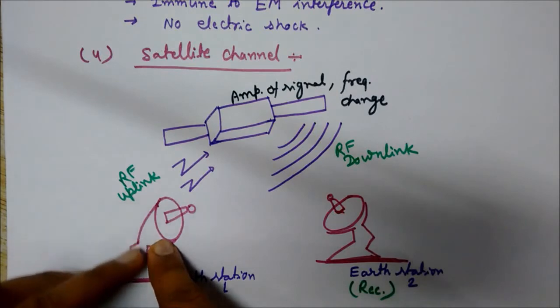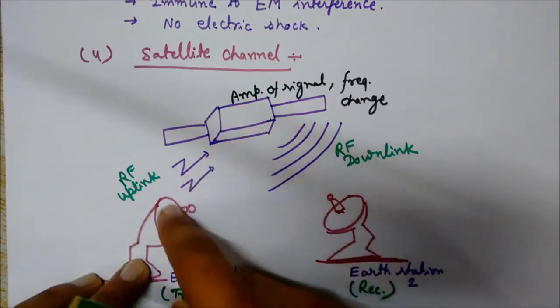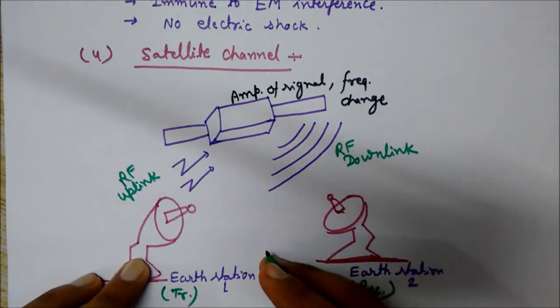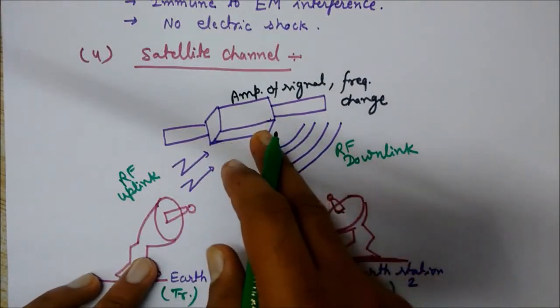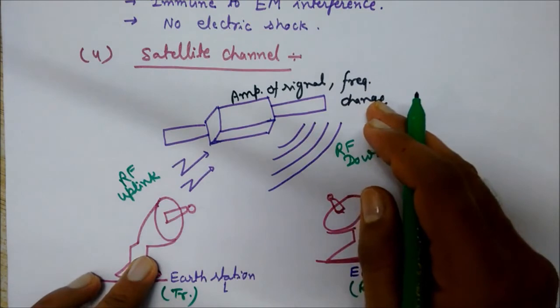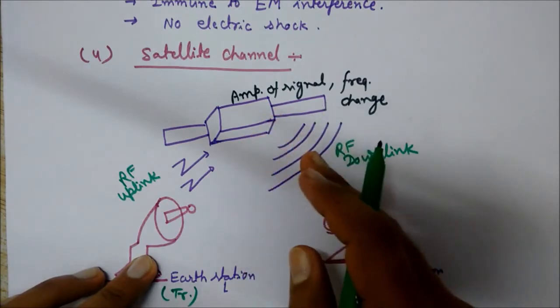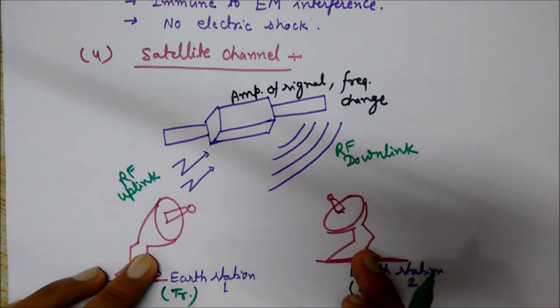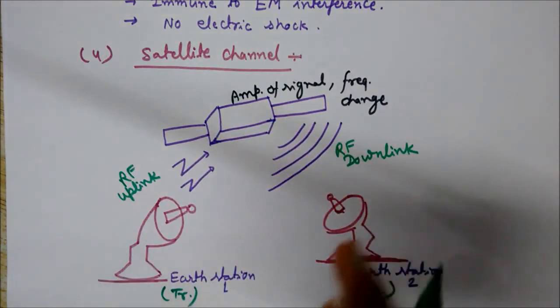The transmitter sends the message to the satellite. Since it is at a very large distance from the earth, the signals get weak. So amplification of the signal takes place in the satellite and the frequency is modified as per requirement. Then it sends the signal back towards the receiving earth station where the signal is recovered using the satellite channel.